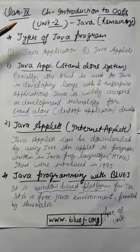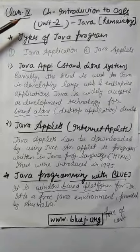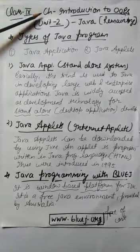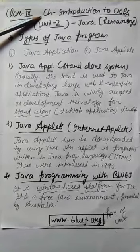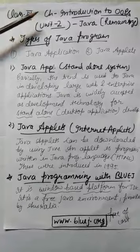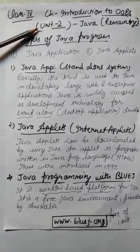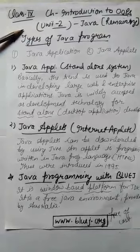So class, here is the remaining topic of the first unit that is introduction to OOPS because this chapter consists of two units. First I have explained the principle and the second one is this. So here are the remaining topics that I am going to explain today.